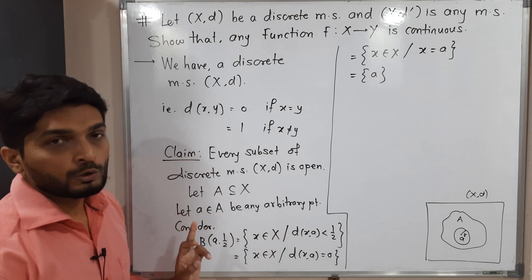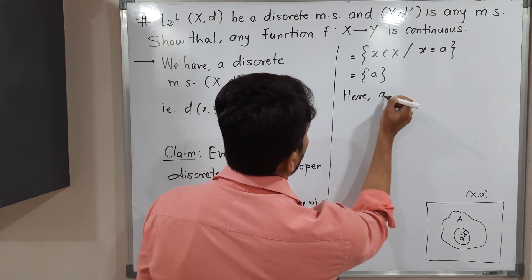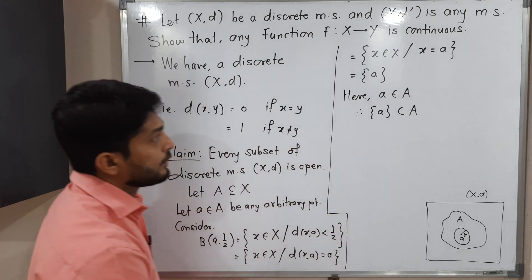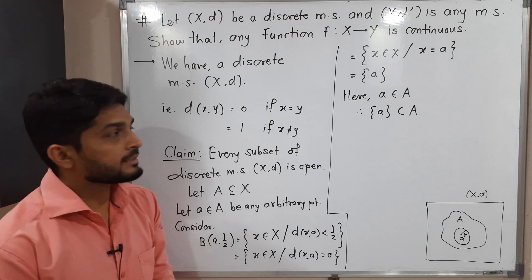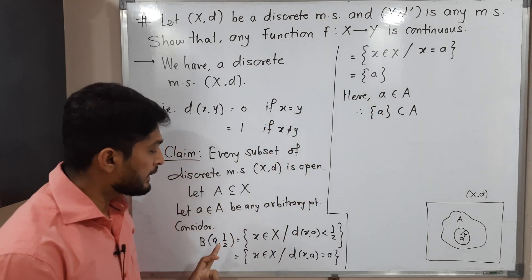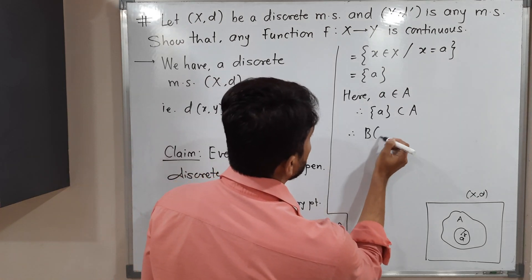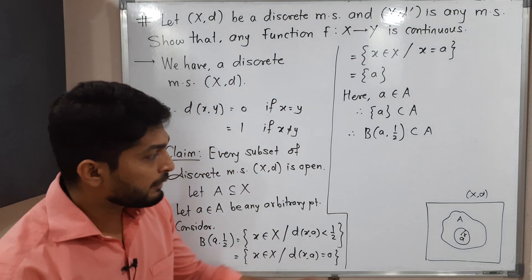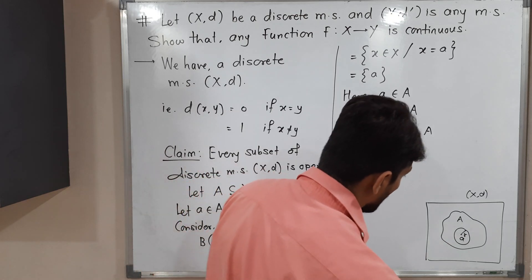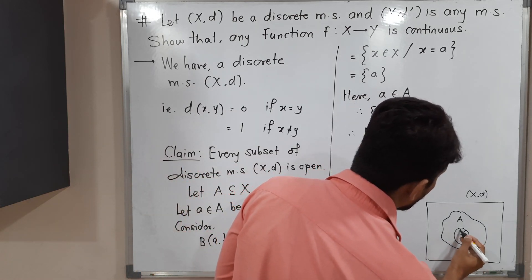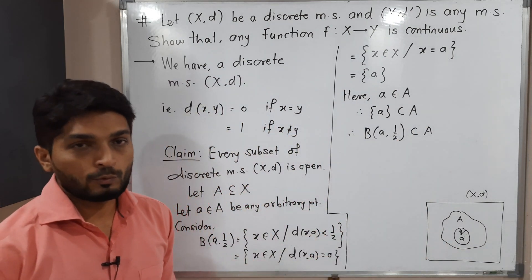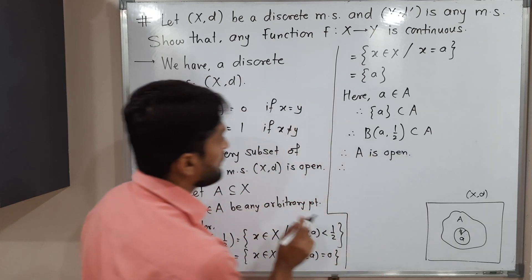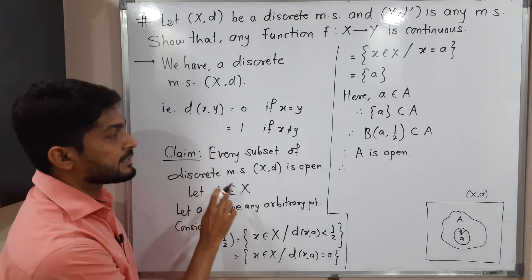Since a belongs to capital A, the singleton set {a} is a subset of A. That singleton {a} is exactly the ball with center a and radius one-half that we just proved. So the ball B(a, 1/2) is a subset of A. Since small a is any arbitrary point and we found a ball around it lying inside A, we can declare A is an open set. Therefore A is open, and every subset of discrete metric space is open.